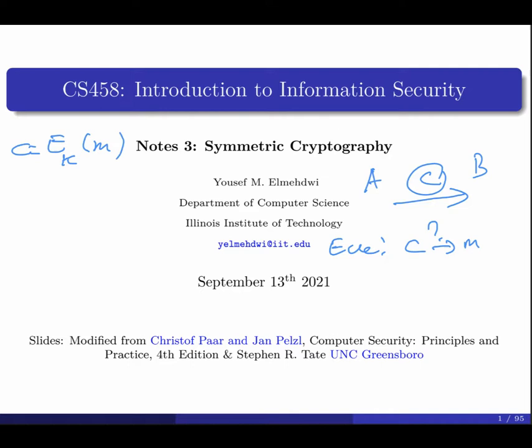C is the ciphertext; to get it, you apply the encryption using the key. P or M is the plaintext. To decrypt the message, you apply a different algorithm using the key to produce the plaintext. For the ciphertext-only attack, the attacker knows only the ciphertext and is trying to figure out the plaintext — or ideally the key — without other information.